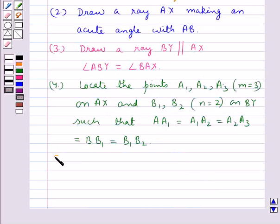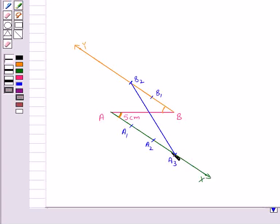Next, we join the points A3, B2. We have joined A3, B2. We mark this point at which this line intersects AB as the point C.